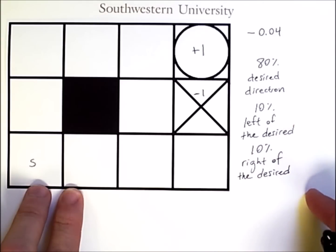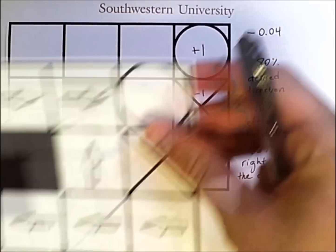Given these circumstances here, there are no longer two easy paths to the goal. Rather, the optimal path is this one here.